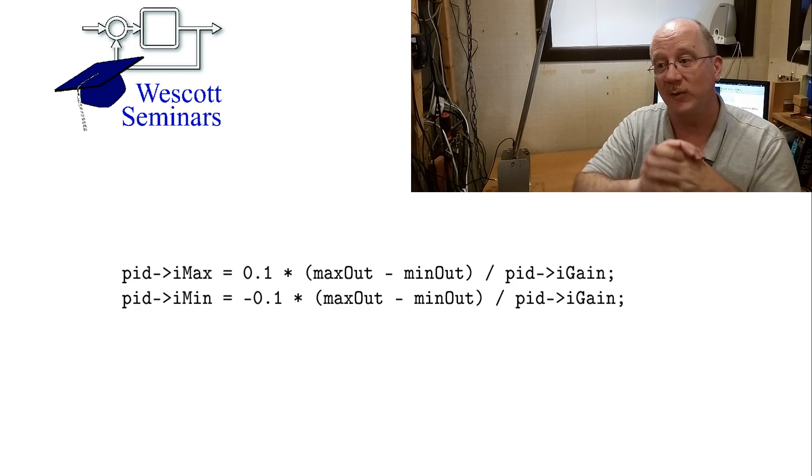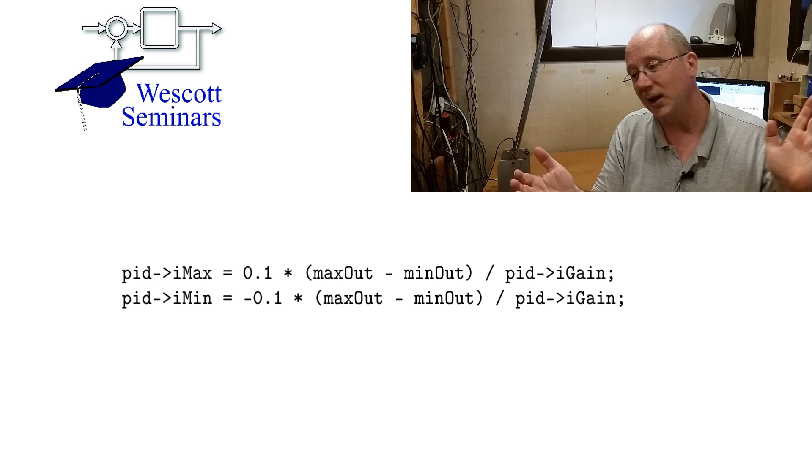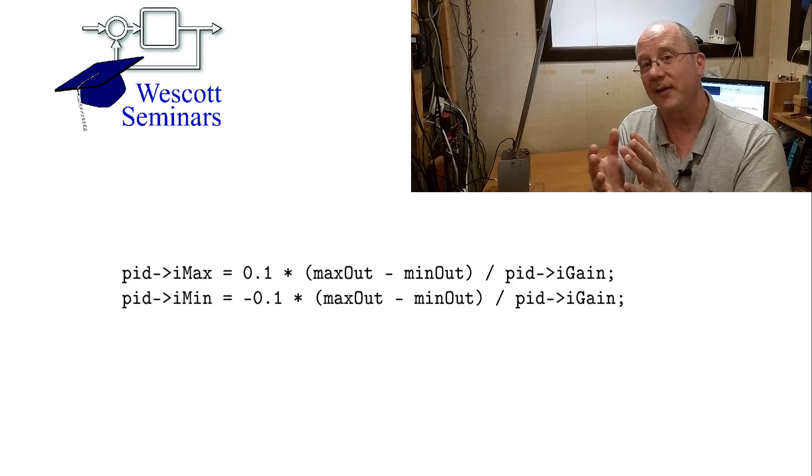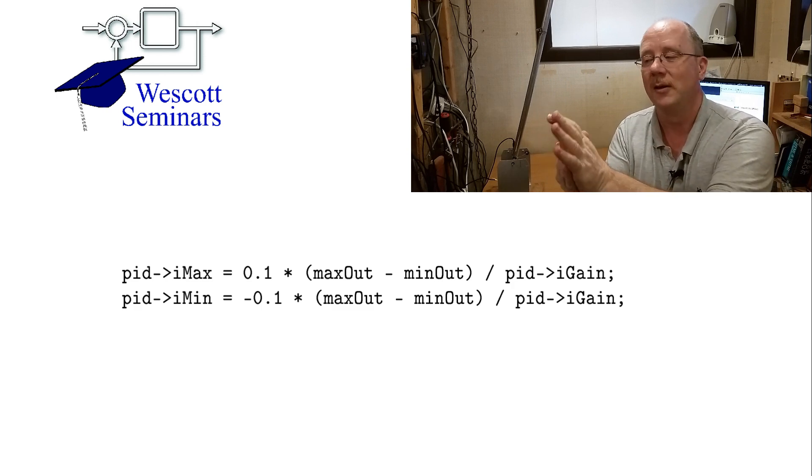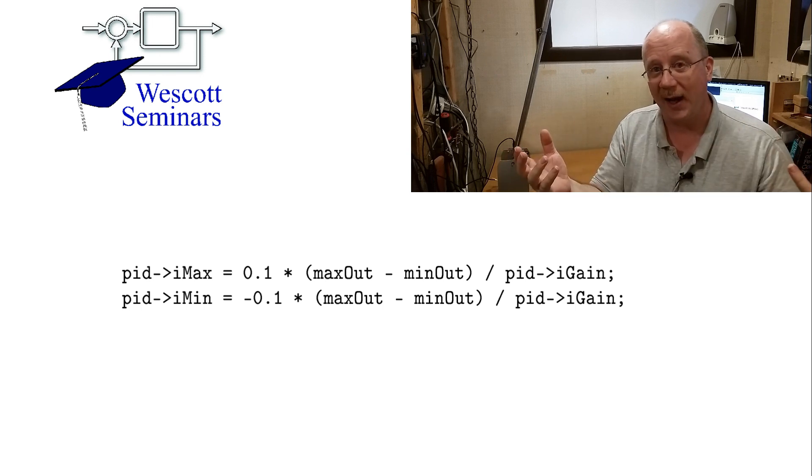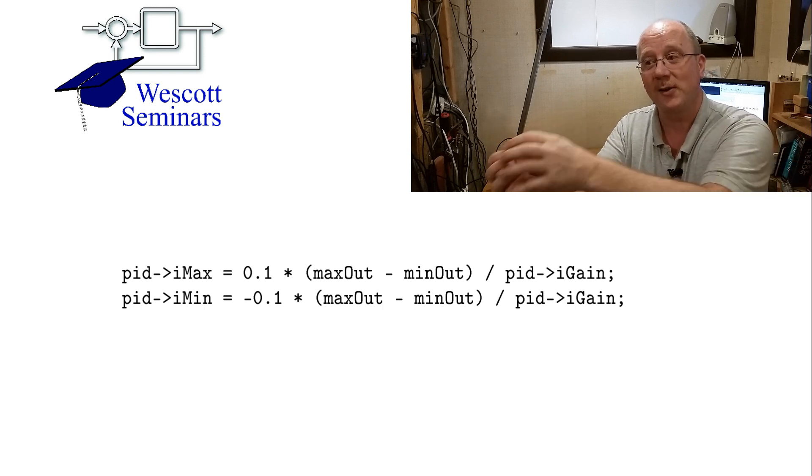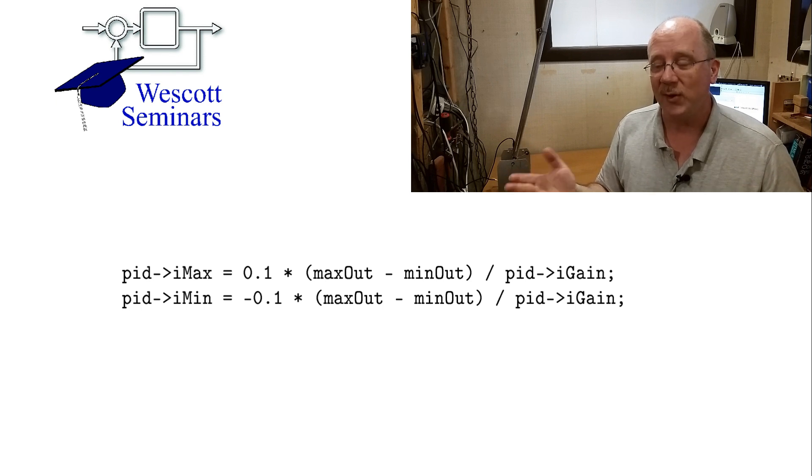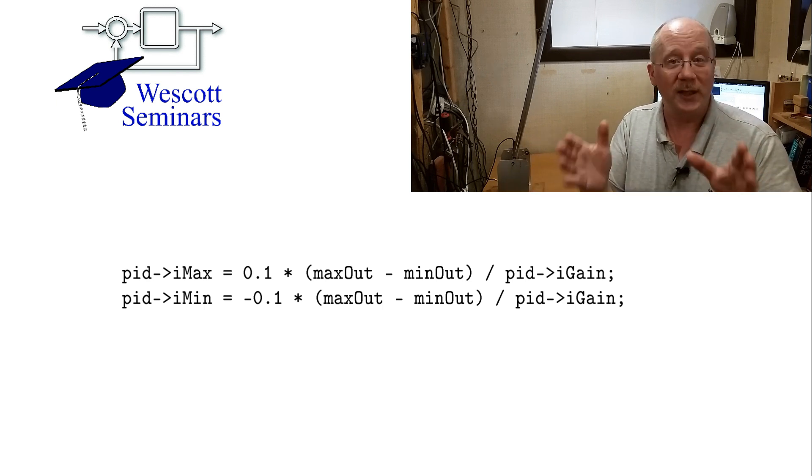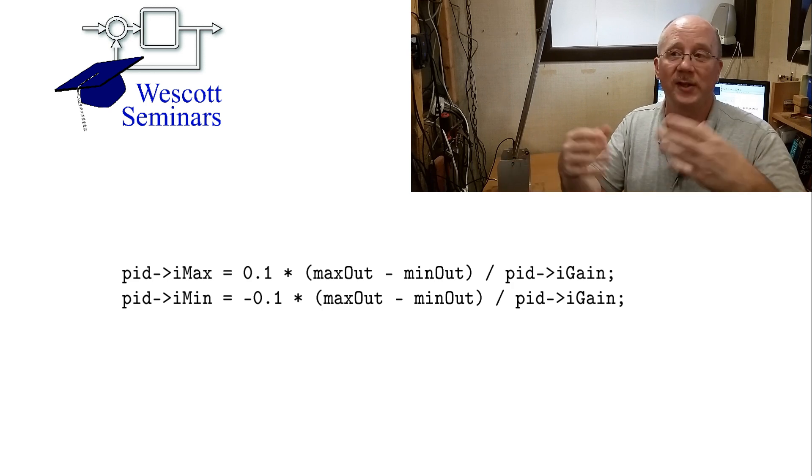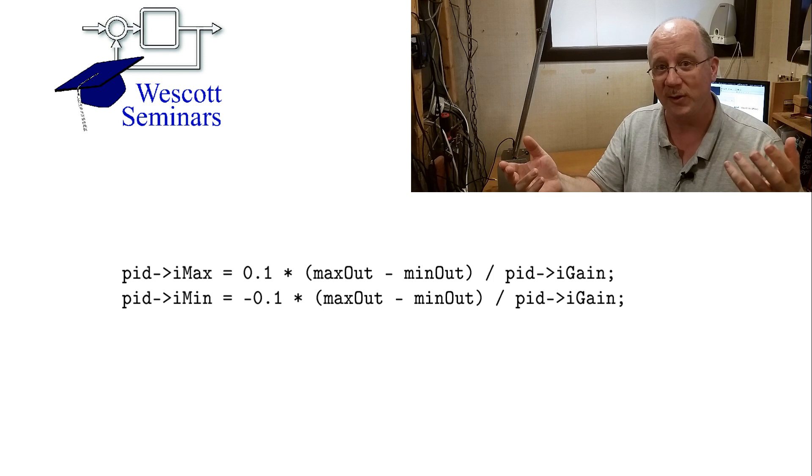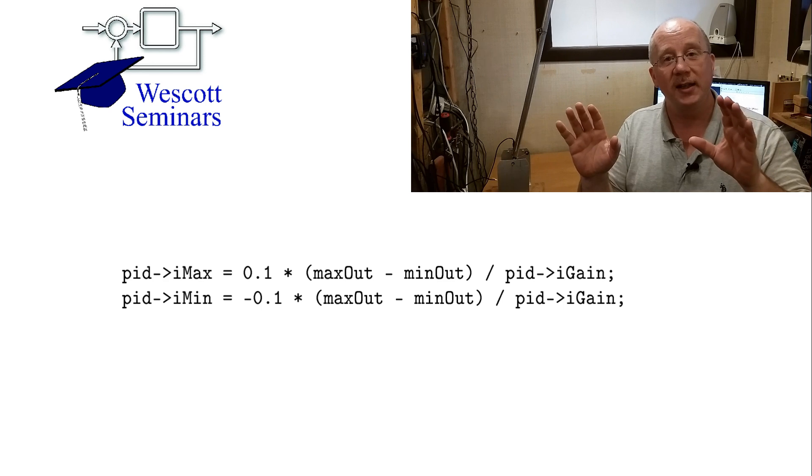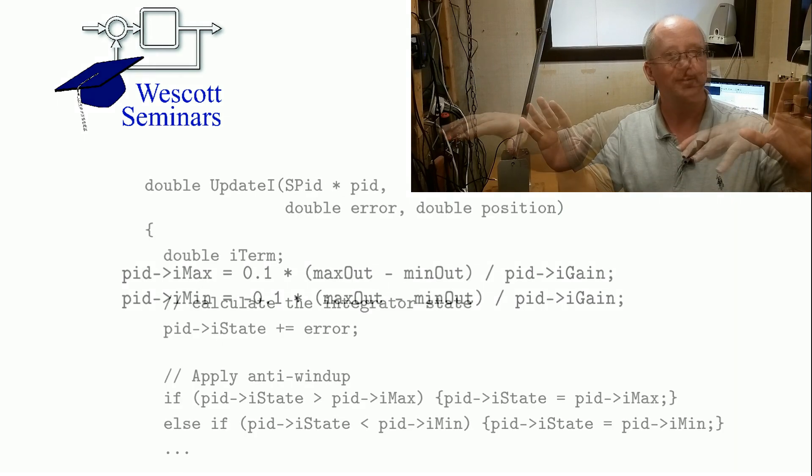And basically, what that does is that when you have some large excursion in the system, the integrator bangs into one of those limits. And then until the integrator comes out of that, or until the thing gets close to the target, then it's basically just acting as a proportional derivative control until it gets close. And then the integrator starts working. Every system is different. So what works best for you is a matter of what you're designing. So this is kind of where the art of control engineering comes in. So for now, just be aware that you have this option, and if you need it, go ahead and use it.